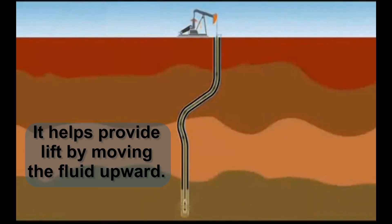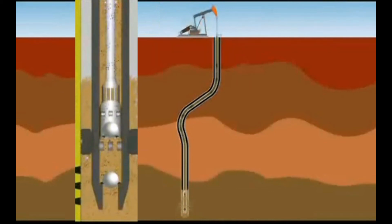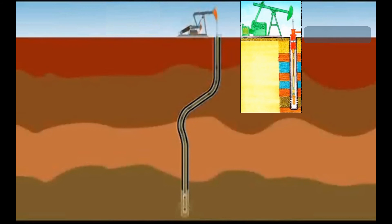It helps provide lift by moving the fluid upward into the tubing one stroke at a time. In essence, each pumping stroke pushes a little more column of fluid upward into the tubing. This continues as each pumping stroke pushes the ones above it until the fluid is pushed out of the wellhead and into the flowline.